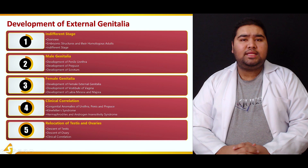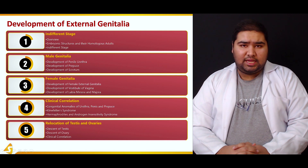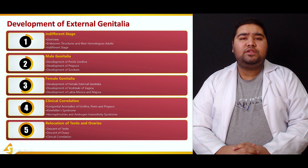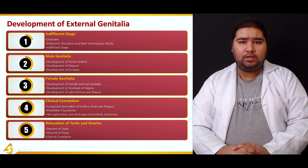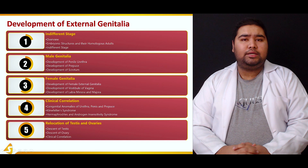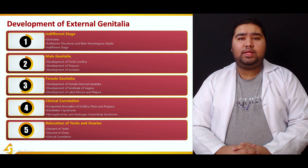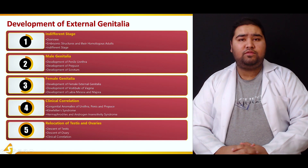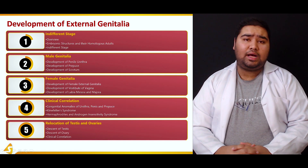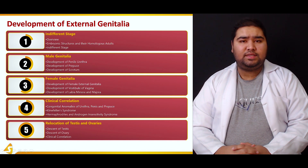Then we'll see the development of male genitalia in the second stage — how an indifferent gonad under the influence of male hormones makes the male reproductive system. In the third section, we'll see how, in the absence of male hormones and the presence of female hormones, this indifferent gonad turns into the adult female reproductive system.